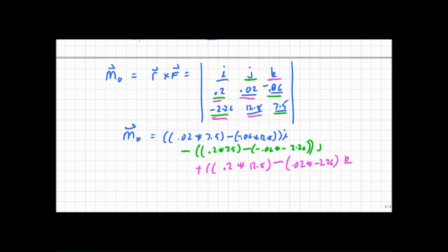So if I did all this correctly, my M zero vector is going to be equal to 0.918 i minus 0.36,